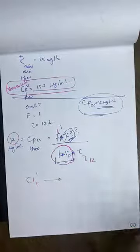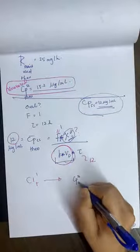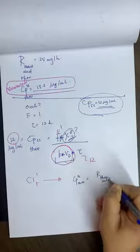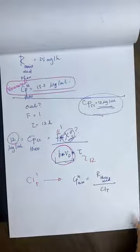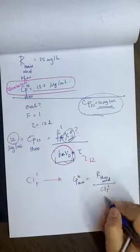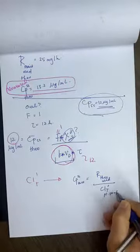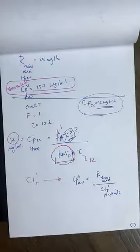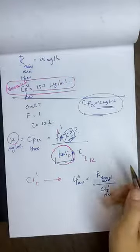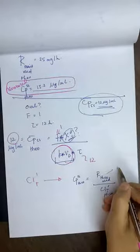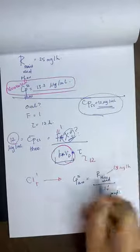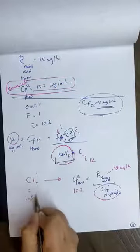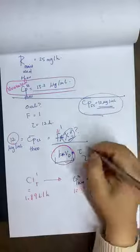Average steady state concentration of theophylline equals R theophylline used divided by clearance. So 25 mg/hr divided by 13.2 mcg/mL gives us clearance equals 1.89 liters per hour.